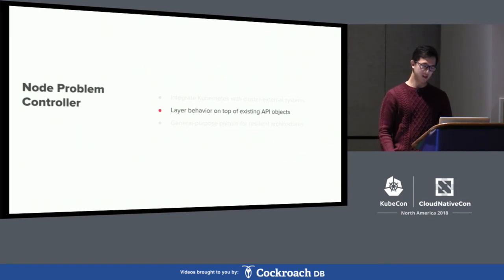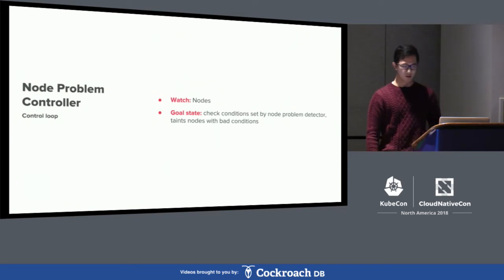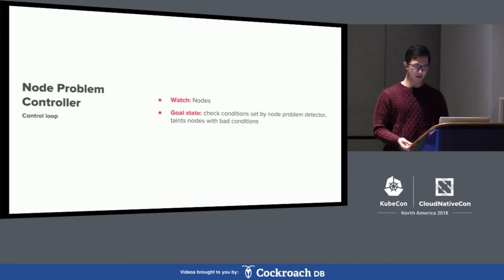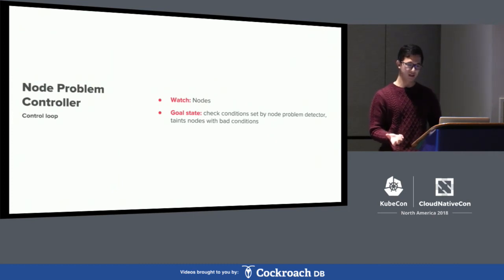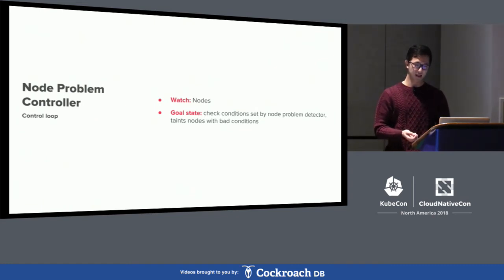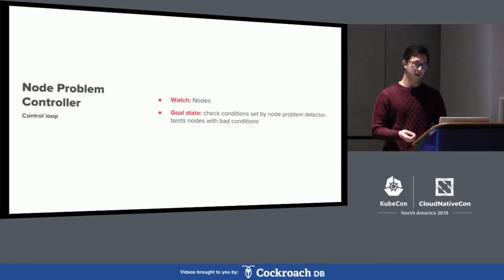Third, we have the node problem controller, which layers behavior on top of existing API objects. It watches nodes and provides another layer of self-healing on top of our clusters. It works in tandem with the node problem detector, an upstream Kubernetes project that health checks the underlying minion nodes and sets conditions on nodes based on health check results — but doesn't provide any remediating action. The node problem controller checks those conditions and adds taints to nodes that have undesirable conditions, which we use for enforcing things like the presence of Datadog or kubed daemon set pods.